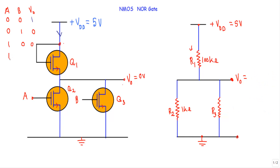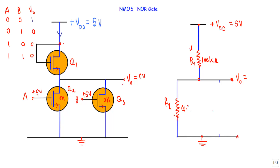Case 4: A = 1, B = 1. Both inputs are at logic 1, so +5 V is applied to both terminals. Q2 and Q3 are both ON with R2 = R3 = 1 kΩ. These two resistances are in parallel, giving an equivalent resistance R4 = 0.5 kΩ. Using the voltage divider: V_out = (0.5k / (100k + 0.5k)) × 5 V ≈ 0 V, so the output is at logic 0.